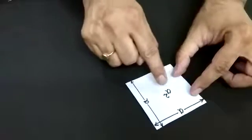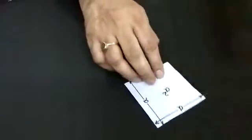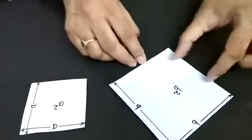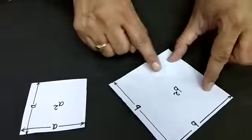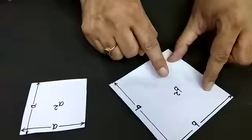So area of this square is a². And this is another square, side of this square is b, so the area of this square is b².